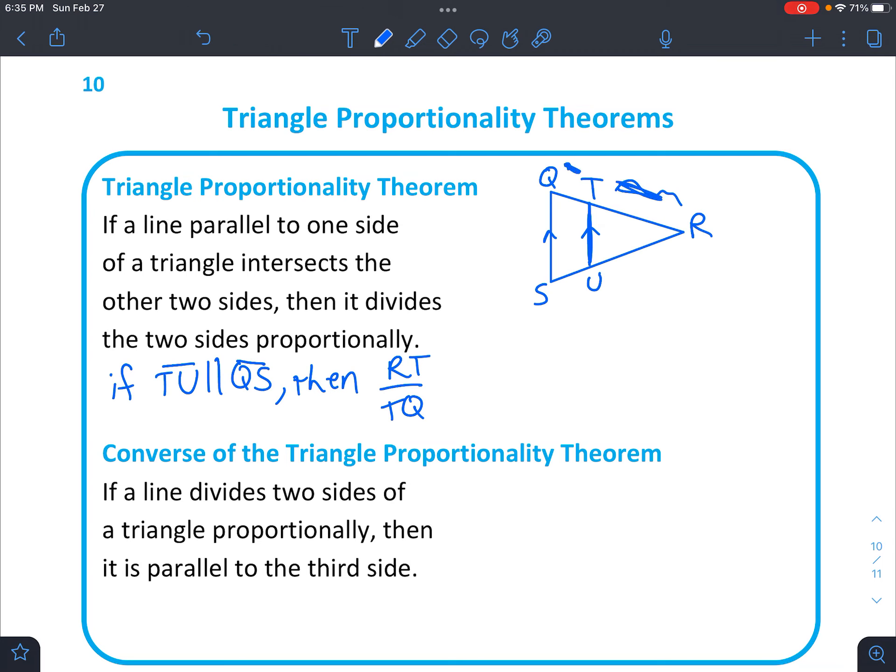So this side here compares to this side the same way that RU, so see this longer side here, compares to US. So these two go together, and these two go together. So you can set up a proportion in order to find missing sides.